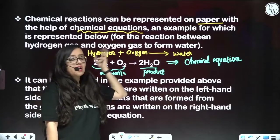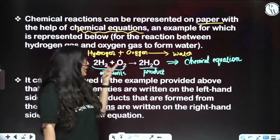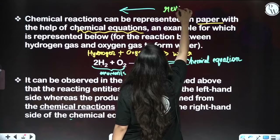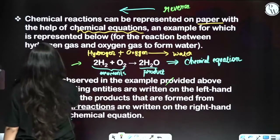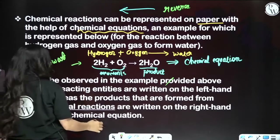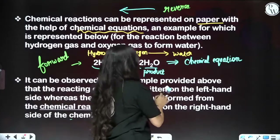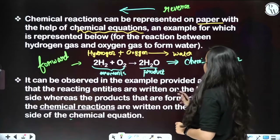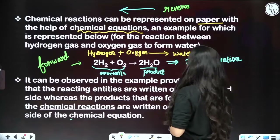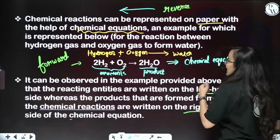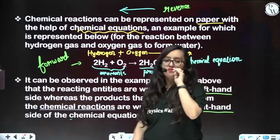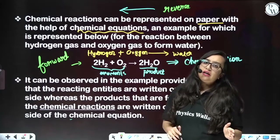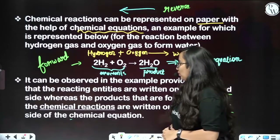If the reaction is coming from product to reactant — meaning product becomes reactant and reactant becomes product — then that is the reverse direction. Always remember: in a forward direction, reactants will always be on the left side of the arrow and products will always be on the right-hand side of the arrow.